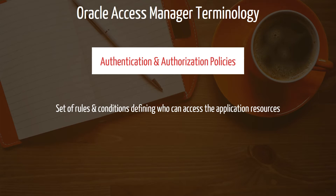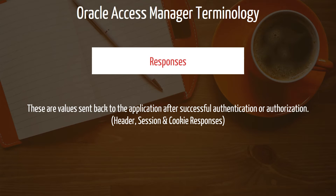Next, we have Authentication and Authorization Policies — these are sets of rules and conditions defined for an application resource. They define which authentication method to use, which group of users can access a particular application, what header responses to send back to the application after authentication and authorization, and many other parameters. Finally, we have Responses — values sent back to the application after successful authentication or authorization. You can send three types: header responses, session responses, and cookie responses. I'll discuss more about responses later in the demo.